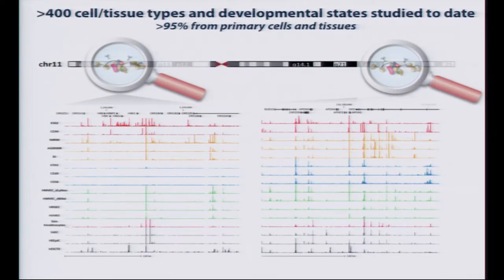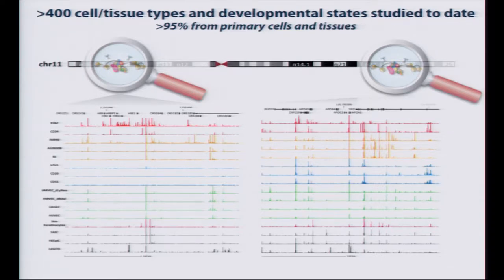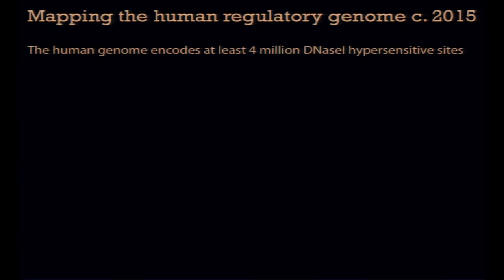There is a huge amount of these data. Collectively, combining the ENCODE data and data from the Roadmap — and eventually all Roadmap data is being consolidated within ENCODE to facilitate access — in the case of the DNase I data, there are over 400 cell and tissue types and developmental states, virtually all from primary cells and tissues. Currently it looks like the human genome encodes at least 4 million DNase I hypersensitive sites.